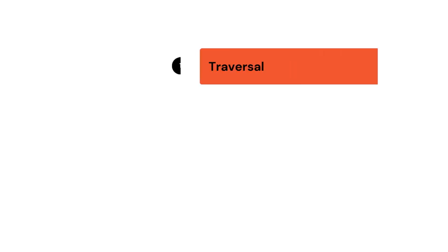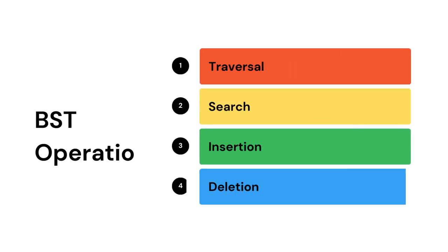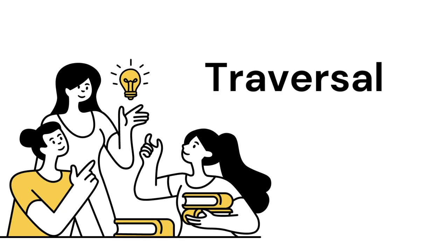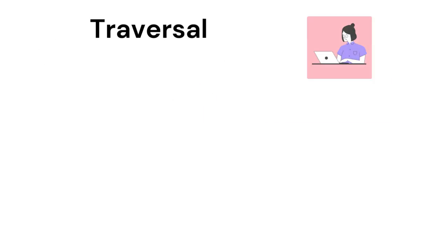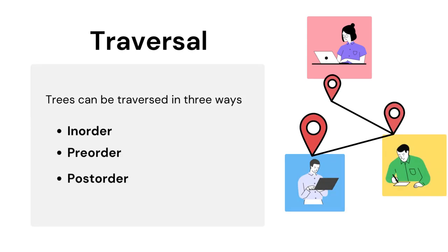There are various operations that we are going to discuss in this BST. First, we will discuss about traversal. Traversal is nothing but going through all the nodes one by one. It can be achieved in three ways: in-order, pre-order, and post-order. Let us discuss each one of them with an example.